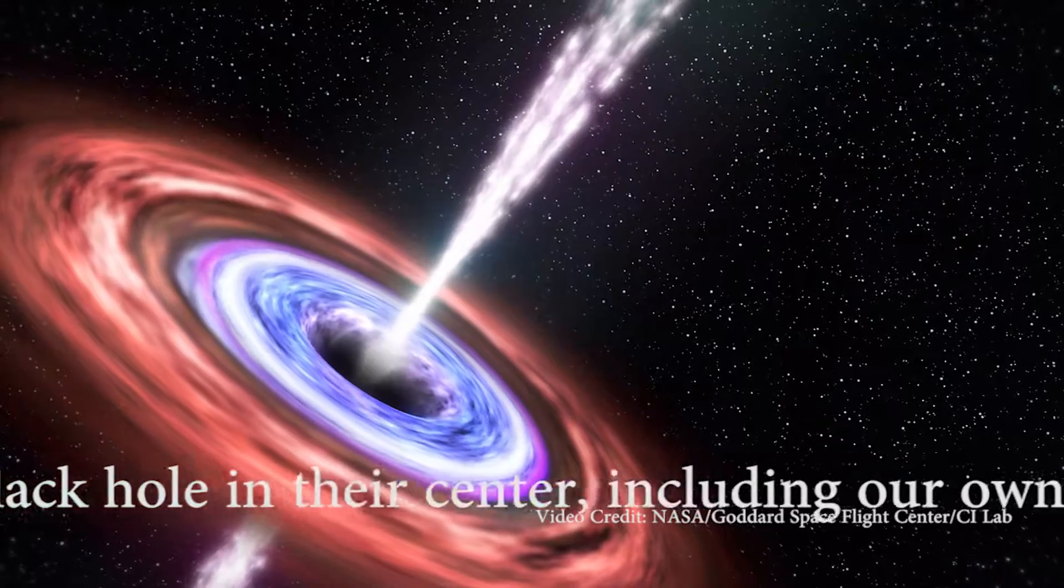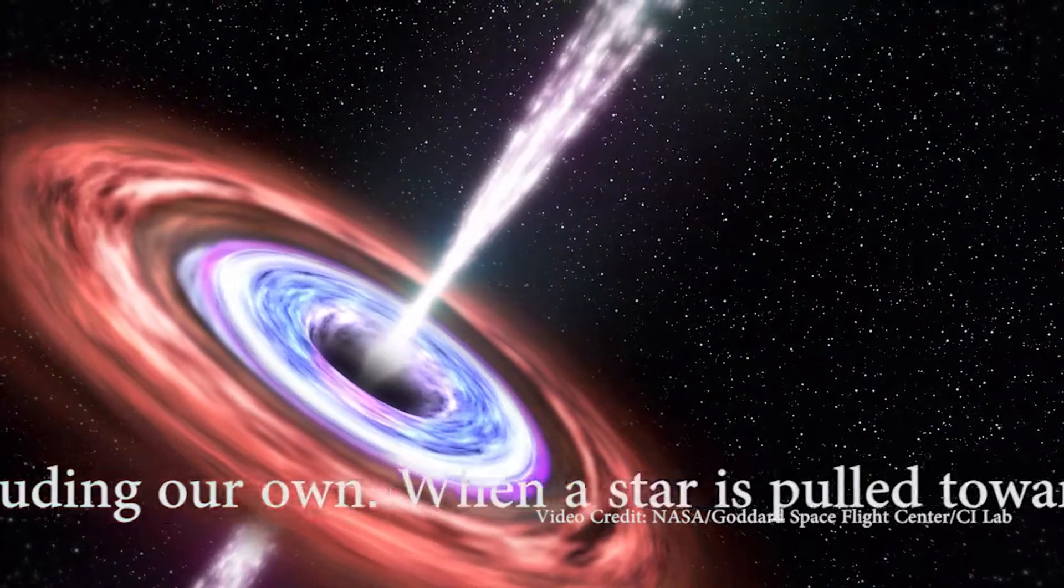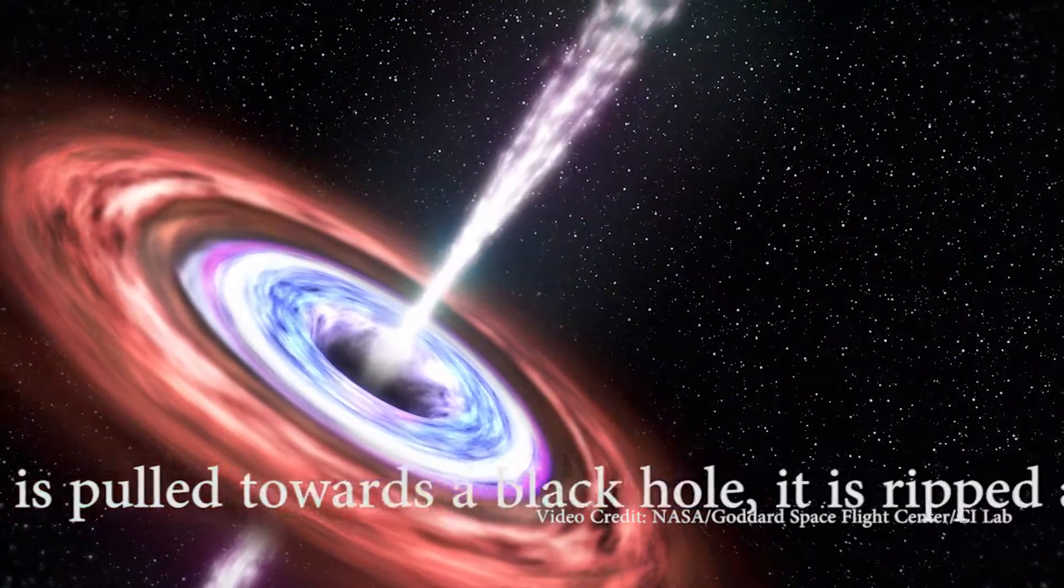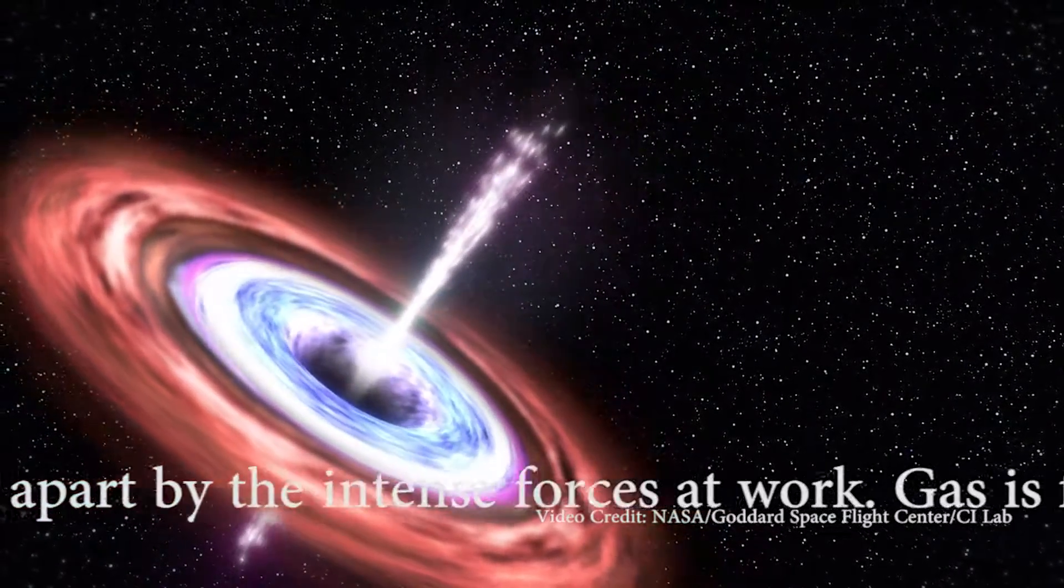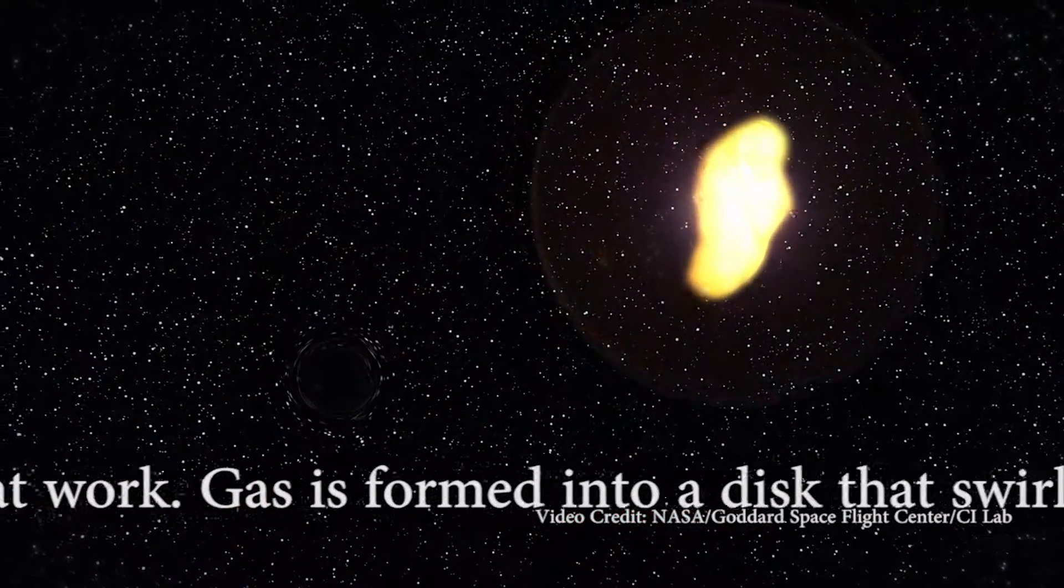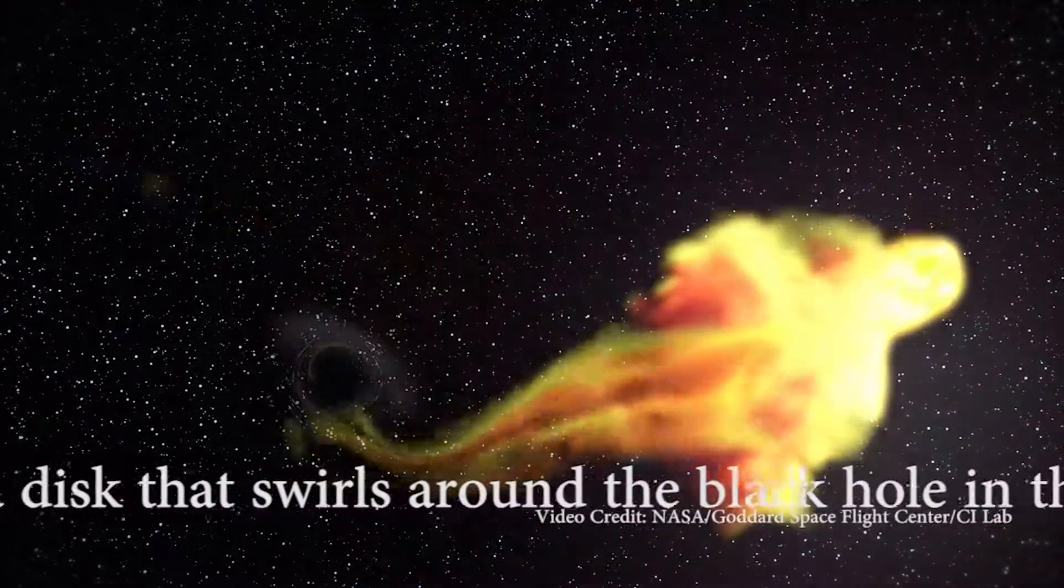Most galaxies have black holes in their center, including our own. When a star is pulled towards a black hole, it is ripped apart by the intense forces at work. Gas is formed into a disk that swirls around the black hole.